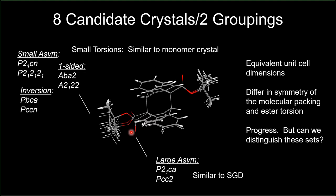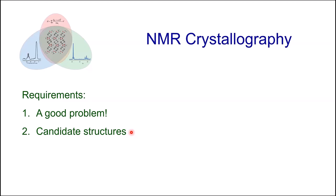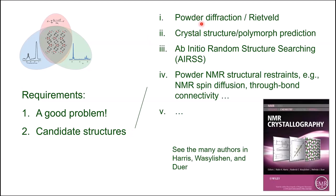We've reached requirement two for NMR crystallography: candidate structures. There's a lot of variability and different approaches to getting candidate crystal structures. Here we use powder diffraction and Rietveld refinement, similar to many groups. It's also possible to use crystal structure prediction and polymorph prediction — Emsley's group has done a lot of that — or AIRSS random structure searching, or using powder NMR structural restraints like spin diffusion or through-bond connectivity. I'd refer folks to the compendium by Harris, Wasylishen, and Veeger on NMR crystallography.